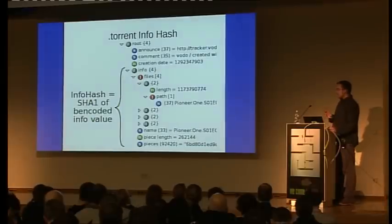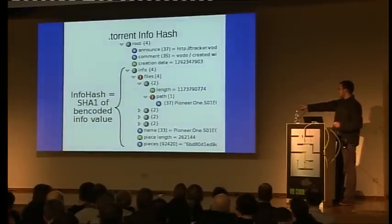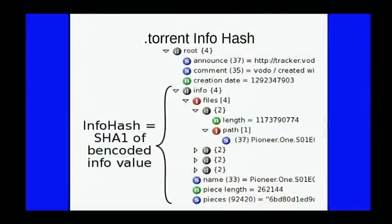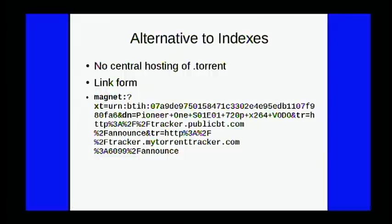The actual content is described by a big 'pieces' string, which contains SHA1 sums of the individual pieces of the data being shared. BitTorrent is really only useful for static data, because if these piece hashes change, the whole info hash changes. One single point of failure are the indexes — we don't want central indexes that can be taken down, like the Pirate Bay, which is still alive but has been down already.